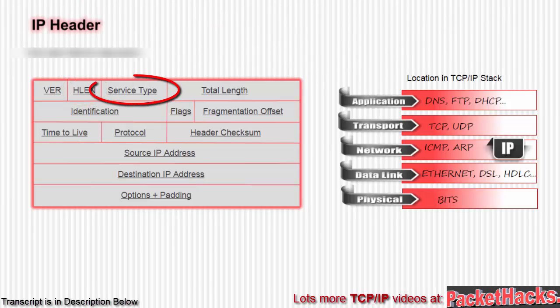The next field is the service type, which is 8 bits. This was originally TOS to indicate QoS, or quality of service, desired in networks that offer service precedence — so high-precedence traffic got the royal treatment. They changed it to differentiated services, which is still concerned with precedence but with a different interpretation, and it's still compatible with the original TOS.